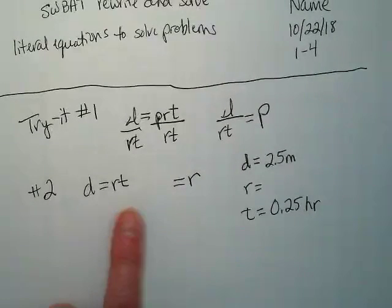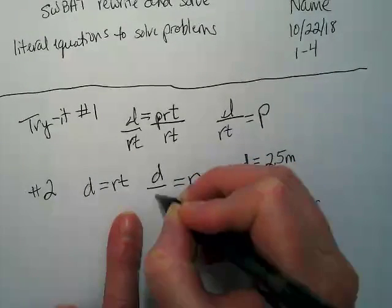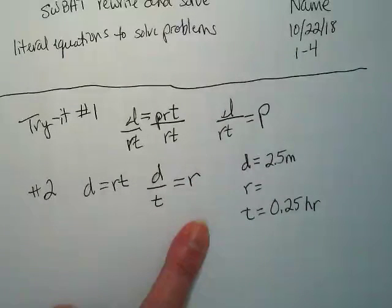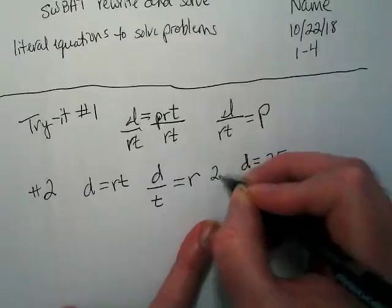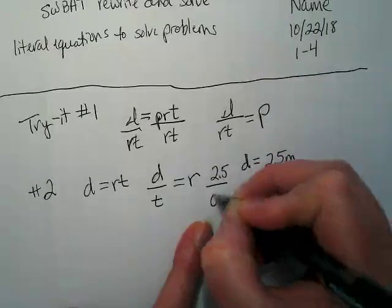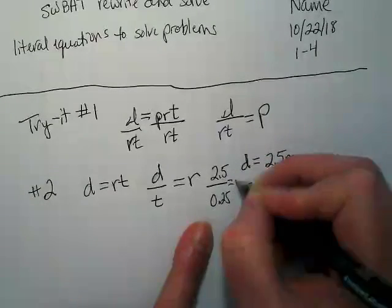To get this R by itself, what would I have to do with the T? Divide it by both sides, right? So that means rewriting this, I'm going to have distance divided by time is going to give me the rate. And what is the problem? 2.5 divided by 0.25 will give us this rate.